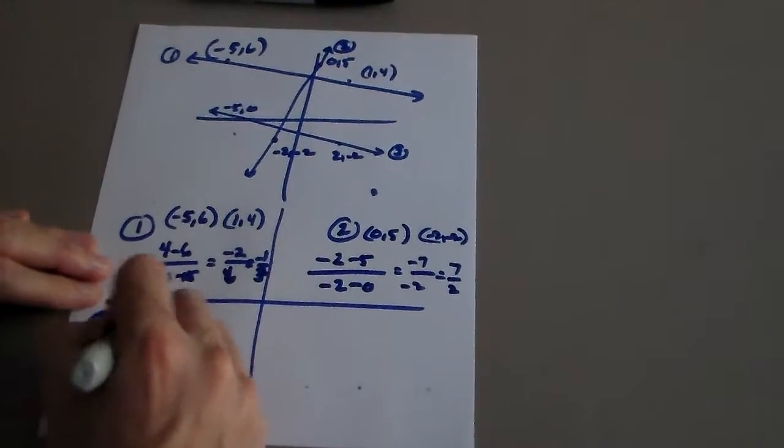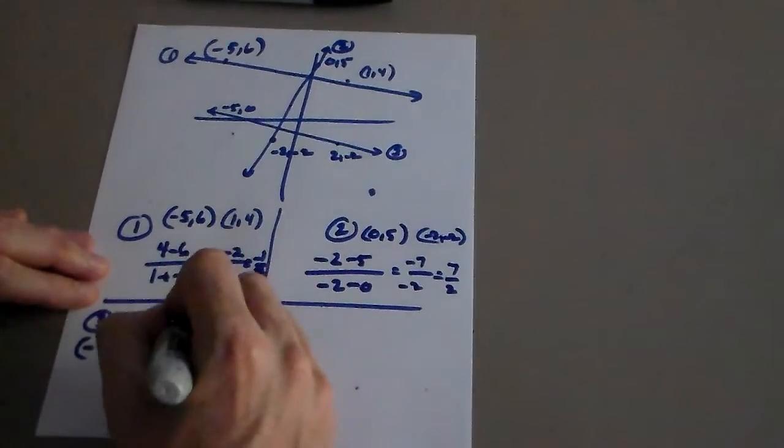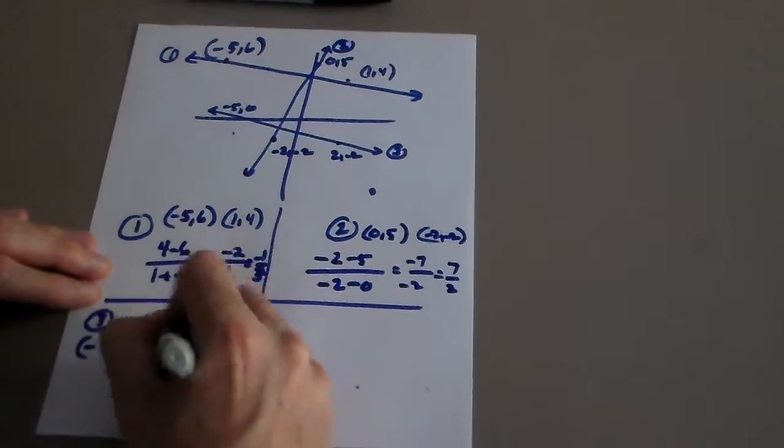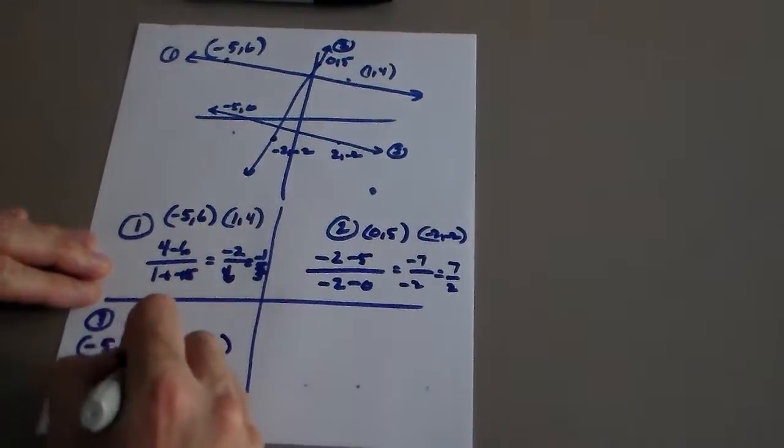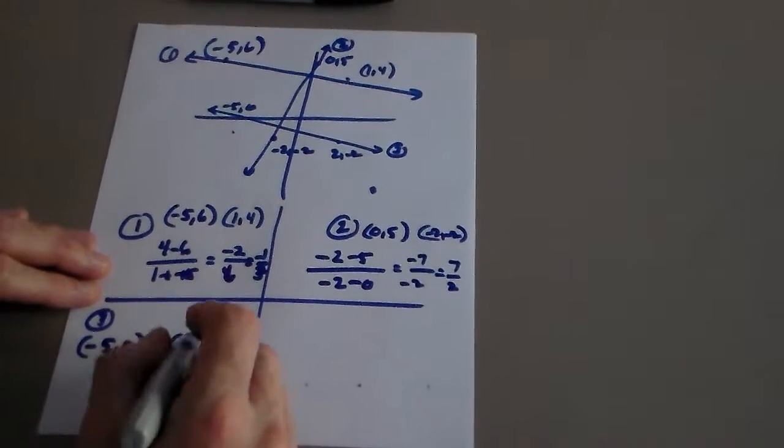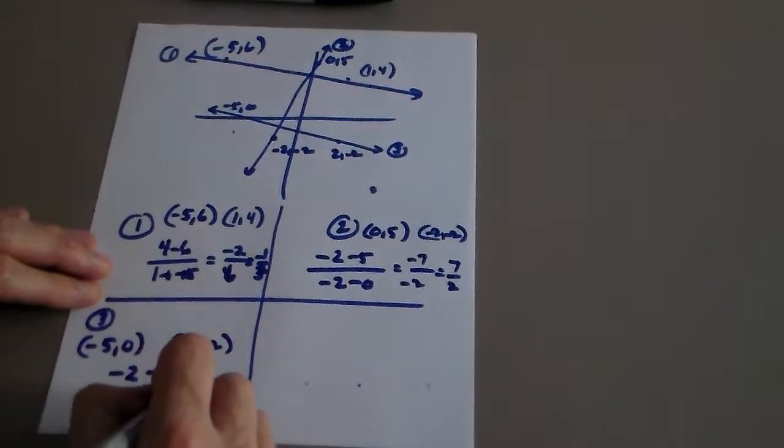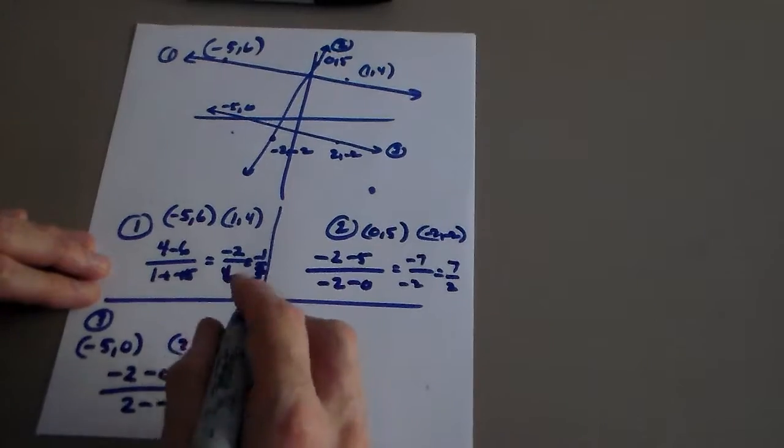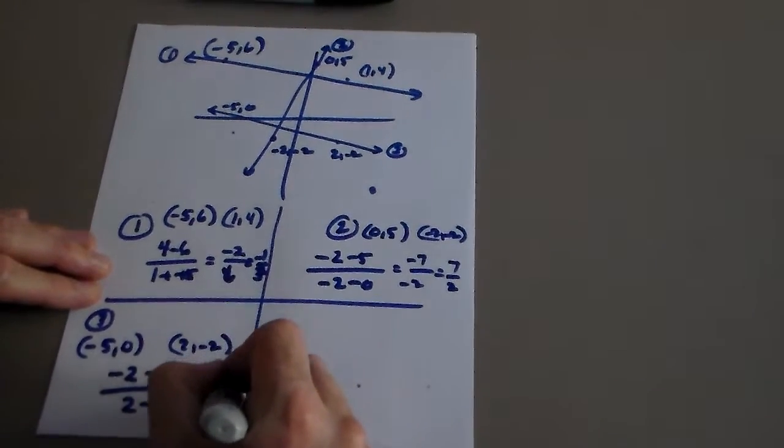Negative five, zero, and two negative two gives me negative two minus zero over two minus a negative five, so I get negative two over seven.